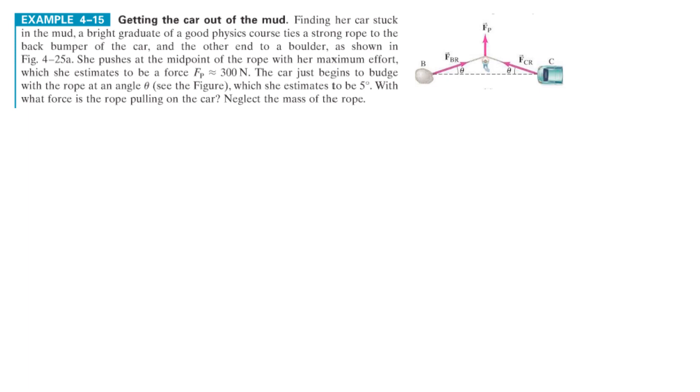Okay. Here's another example. A grad student has her car stuck. Finding her car stuck in mud. A bright graduate student of a good physics course ties a strong rope to the back of the front of the car and the other end to a boulder as shown in the figure. Oh, this is very clever. She's going to find that she could really use some mechanical advantage here. Like, if she pulled on the rope directly, she would not be able to move the car. But this is a very clever and old school way to move the car and use the rope as a mechanical advantage. She pushes at the midpoint of the rope with her maximum effort, which she thinks is going to be around 300 newtons. So this is 300 newtons.